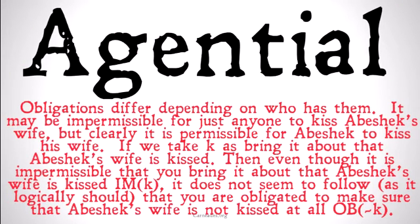Agential or agent-centered logic is going to help solve some of the puzzles and problems we have in deontic logic. Obligations are going to differ depending on who has them. It might be impermissible for just anyone to go up on the street and kiss Abhishek's wife, but clearly it is permissible for Abhishek to kiss his wife, at least if she lets him.